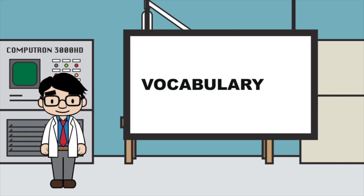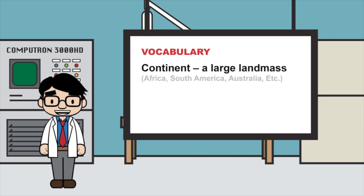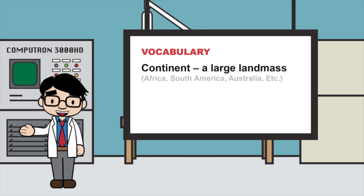Let's start with vocabulary. Continental drift is the slow movement of the continents over the surface of the earth. A continent is a large landmass such as Africa, South America, Australia, and so on.